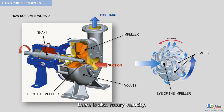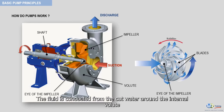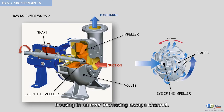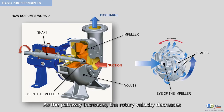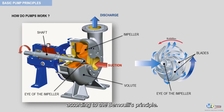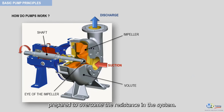This time, according to the reverse of Bernoulli's principle, as velocity goes down, pressure goes up. Because the motor is spinning, there is also rotary velocity. The fluid is conducted from the cutwater around the internal volute housing in an ever-increasing escape channel. As the pathway increases, the rotary velocity decreases, and even more energy and pressure are added to the liquid according to Bernoulli's principle. The liquid leaves the pump at discharge pressure, prepared to overcome the resistance in the system.